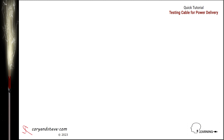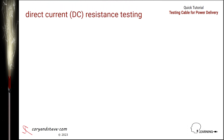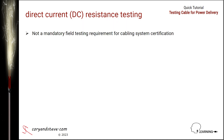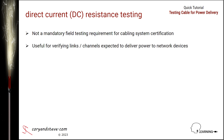Let's begin with an overview of the direct current or DC resistance testing required for this type of verification. It must be emphasized that DC resistance testing is not a mandatory field testing requirement for certifying a cabling system as category compliant. However, any organization that wants to verify whether or not its cabling links or channels can handle power delivery can do so by performing this type of testing.